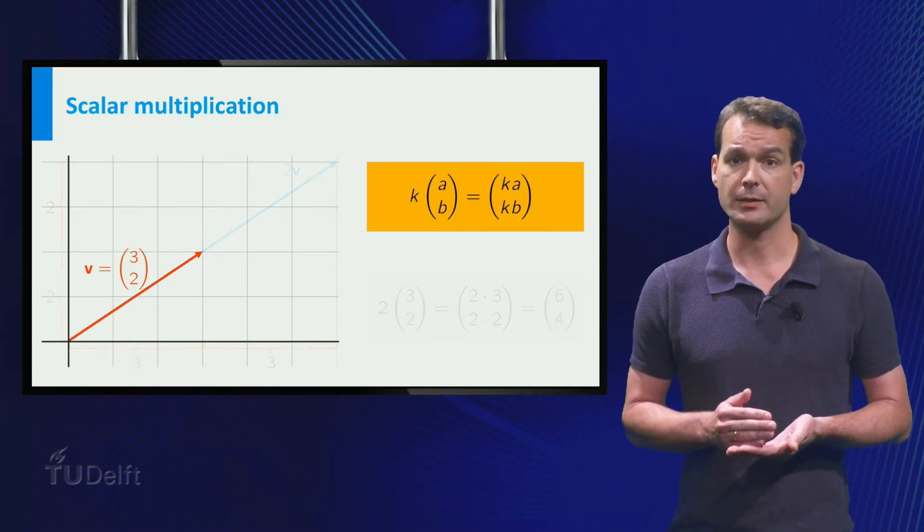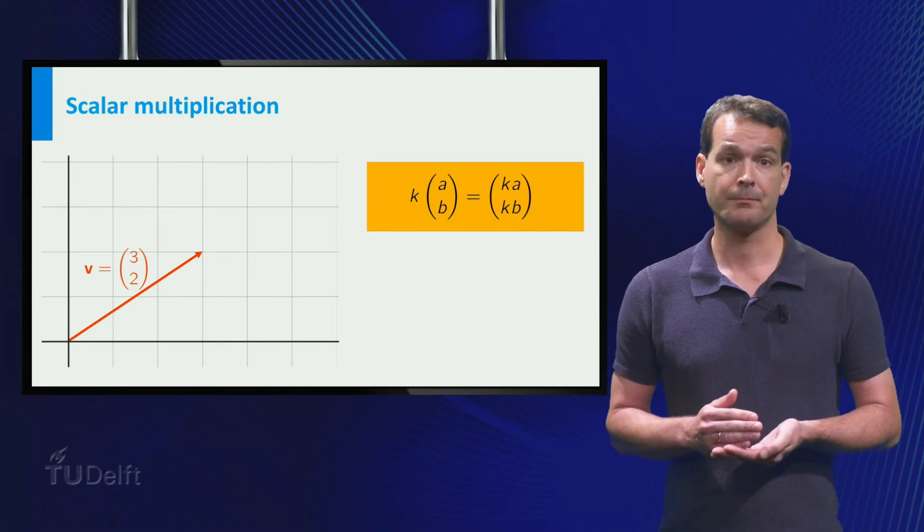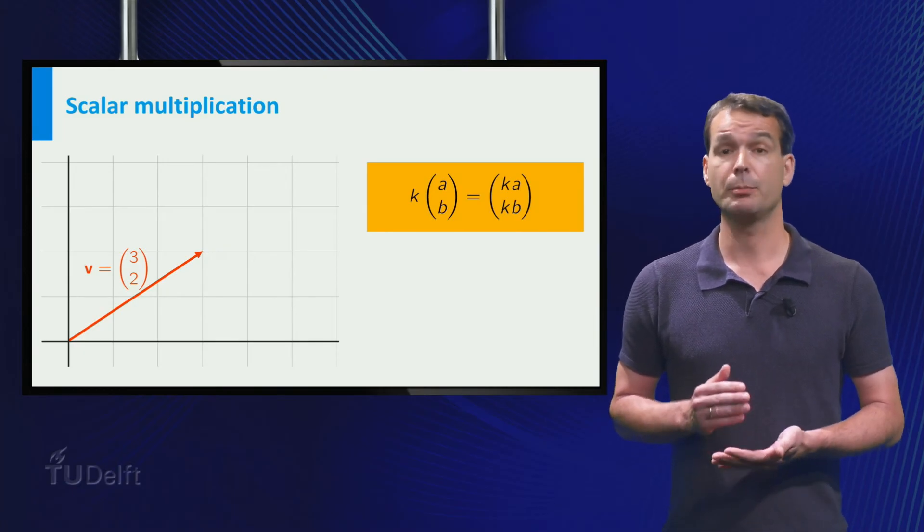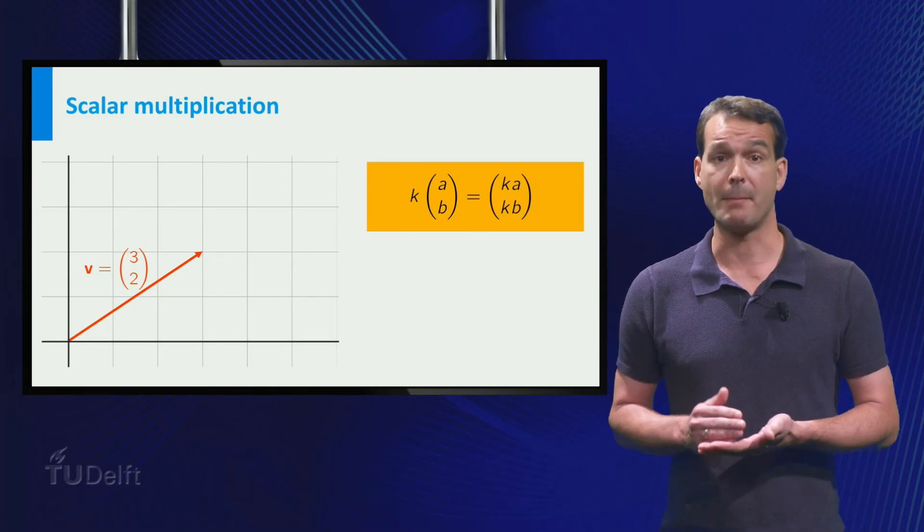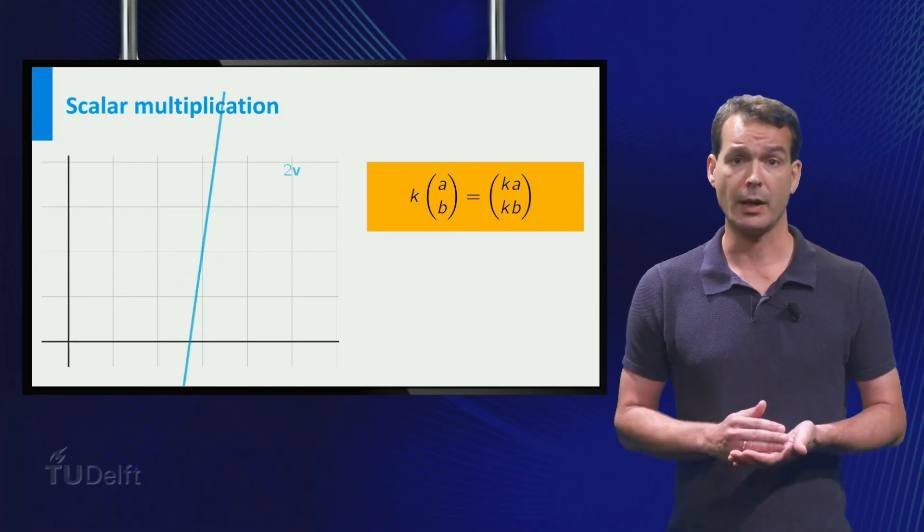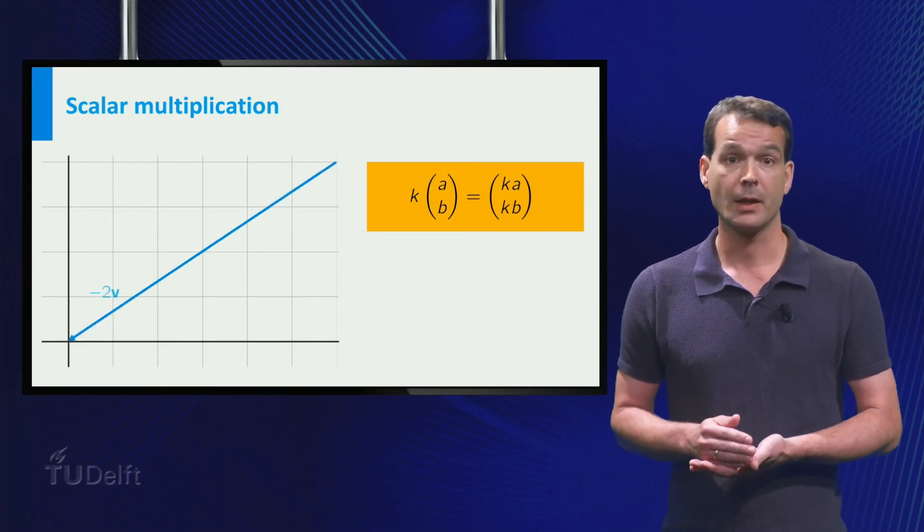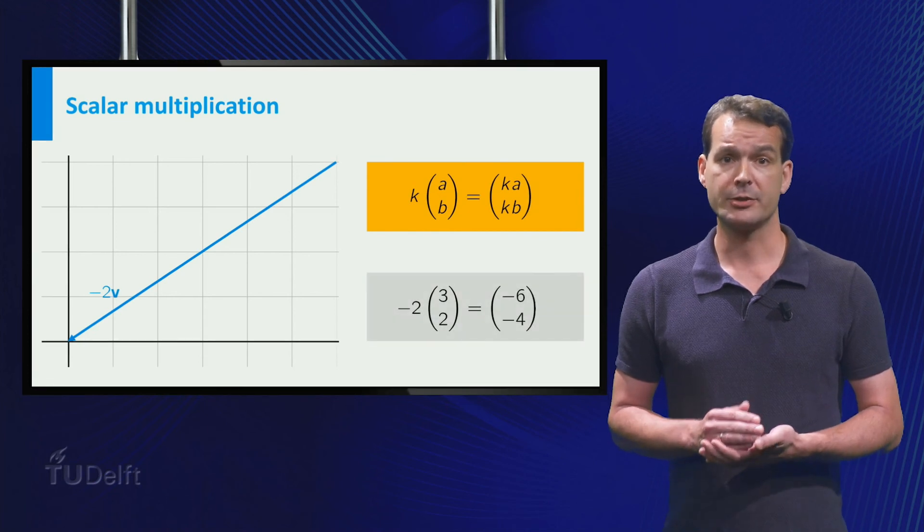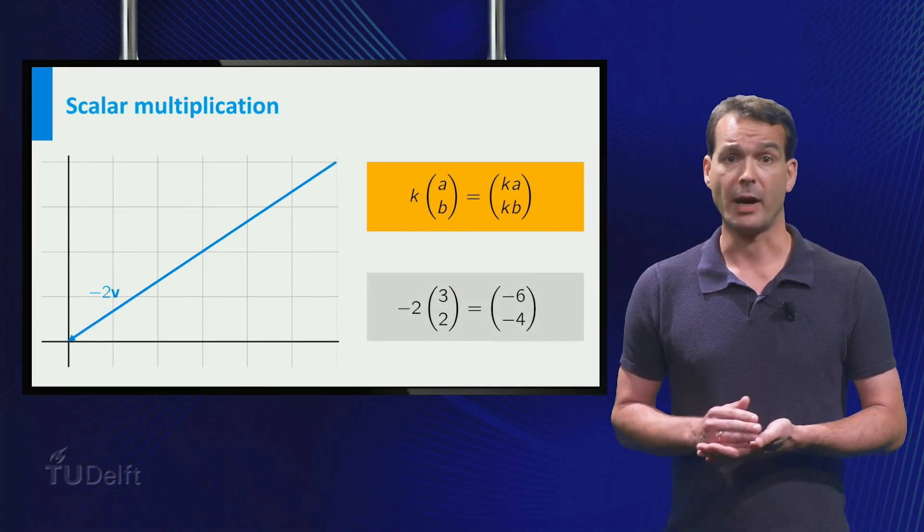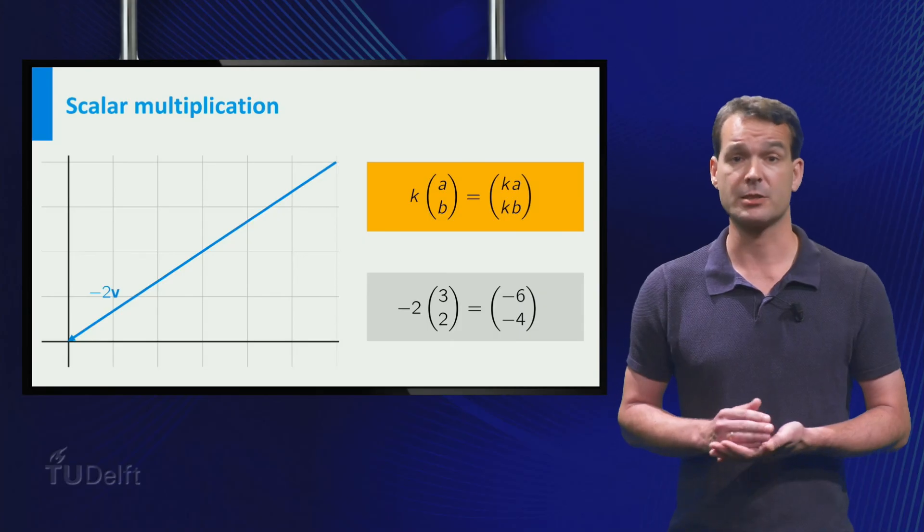This is also valid for negative values of k. For example, if we multiply the vector by, we multiply by 2 and flip the direction. The resulting vector is 2 times minus 3 minus 2, which is minus 6 minus 4.